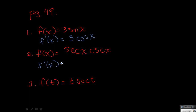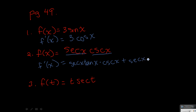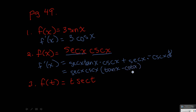On number 2, similar to number 2 in the book, we need to use the product rule because we have secant x times cosecant x. The one in your book is just sine times cosine, so that's a lot more straightforward. The derivative of secant of x is secant x tangent x — then we leave the cosecant alone — plus now we leave secant alone and take the derivative of cosecant, which is negative cosecant cotangent. The most you could do for simplifying it would be to factor out a secant cosecant, giving you tangent x minus cotangent x.